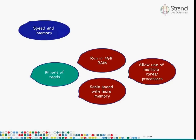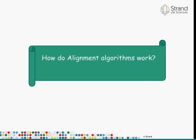Finally, there are speed and memory considerations. You're often aligning tens of millions to billions of reads, so you need multi-core support and a reasonable memory footprint — say four gigabytes of RAM. However, what's important is that the algorithm scales: with four gigabytes it should still run, and with 32 gigabytes it should run more accurately at greater speed. These are all the requirements of an alignment algorithm, and we've tried to meet many of them in our design of Cobweb.